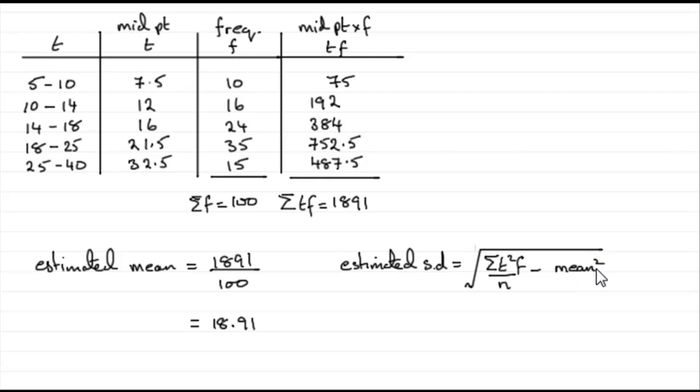Now we've got the mean, it's over here so that's no problem. We've got n, that's sigma f which is 100, but we haven't got sigma t squared f.